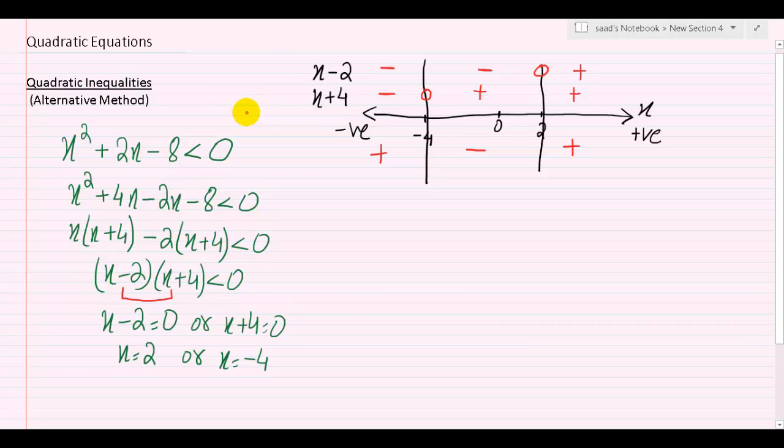Now let's go back to the inequality that was given to us. We have here less than 0, meaning that we are interested in the region where the product of these two expressions is a negative result.